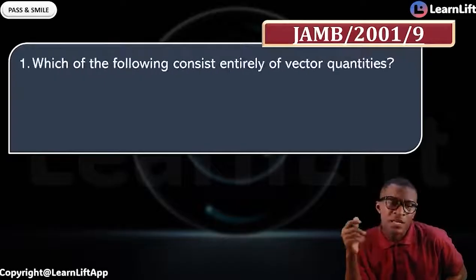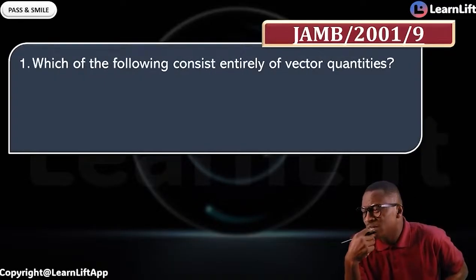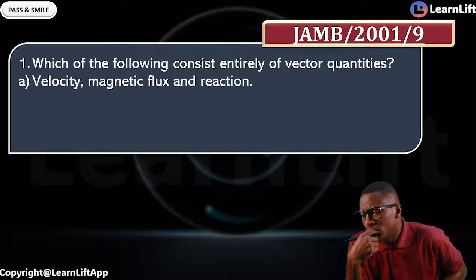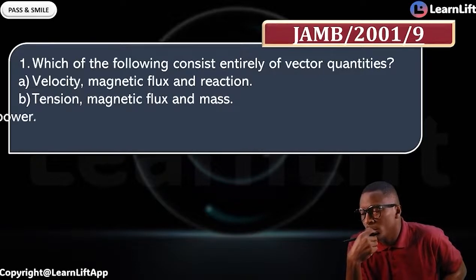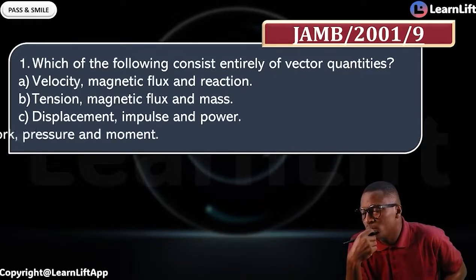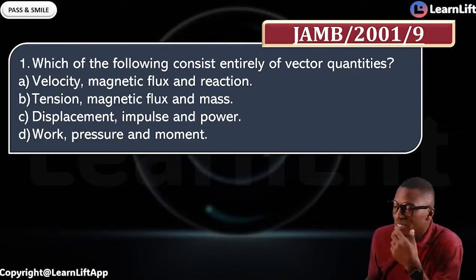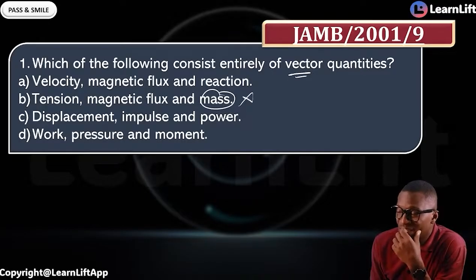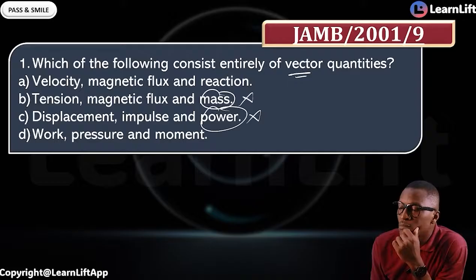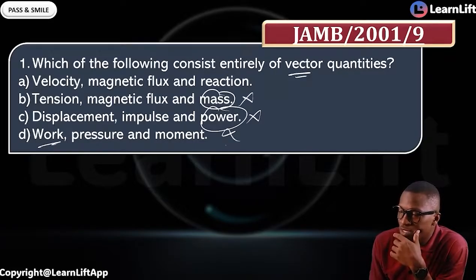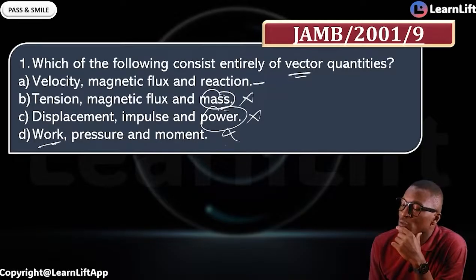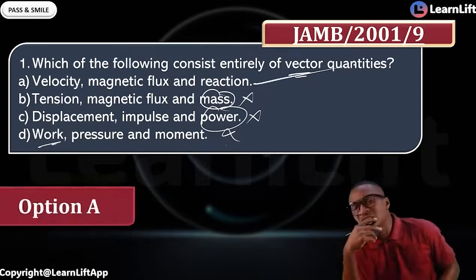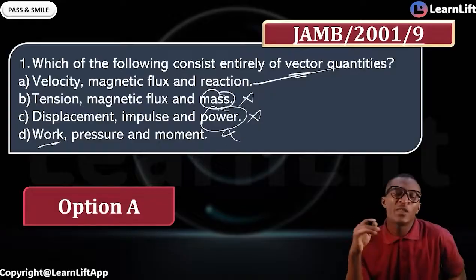Another question: a pair of physical quantities consisting of vectors only — options include: A — acceleration and speed, B — displacement and torque, C — velocity and distance, D — momentum and power. Speed is scalar — A is wrong. Distance is scalar — C is wrong. Power is scalar — D is wrong. Displacement is vector and torque is vector, making option B the answer. For JAMB 2001: which consists entirely of vectors? Velocity, magnetic flux, and reaction — that's option A, the correct answer.